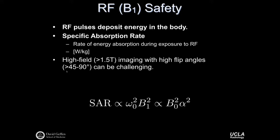The specific absorption rate is proportional to the Larmor frequency squared and B1 squared, which is also related to B0 squared because of the linear relationship between Larmor frequency and B0 field, and also to the flip angle squared. This helps understand what will cause SAR to increase for a particular protocol as it depends on flip angle or as we move from one field strength to another.